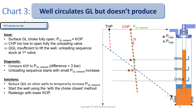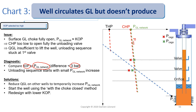What kind of diagnostic can you do in this case? You should compare the kickoff pressure to the gas lift network pressure. Most probably what you will see is that the difference is less than three bar — so basically, gas lift network pressure minus kickoff pressure gives a value lower than three bar, or lower than 45 psi.